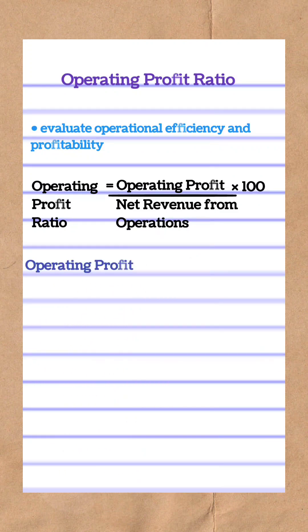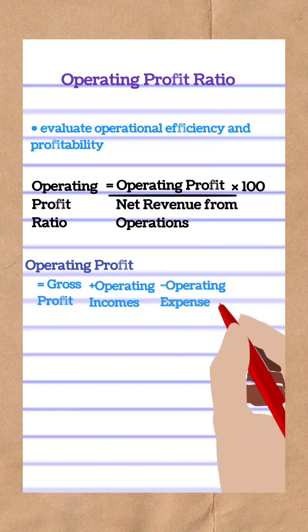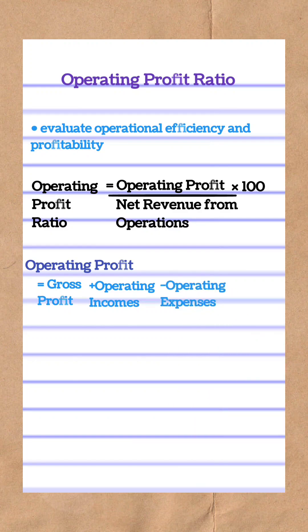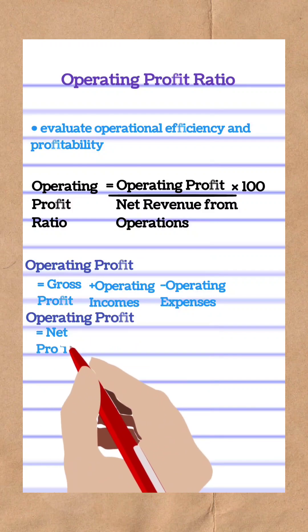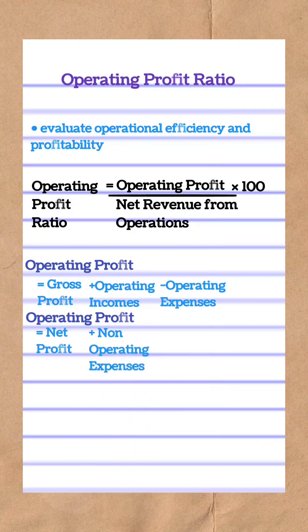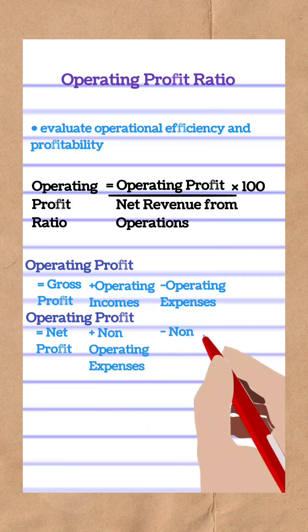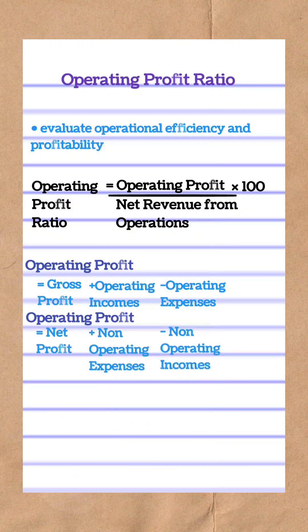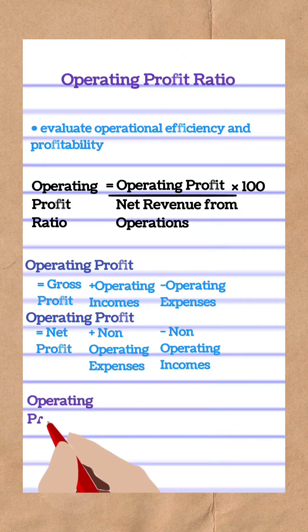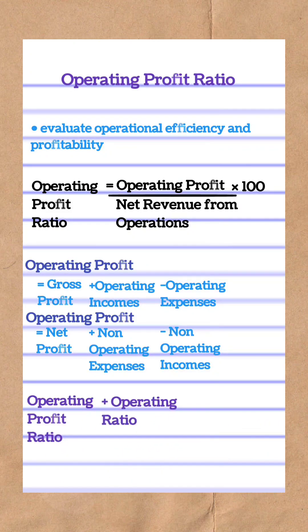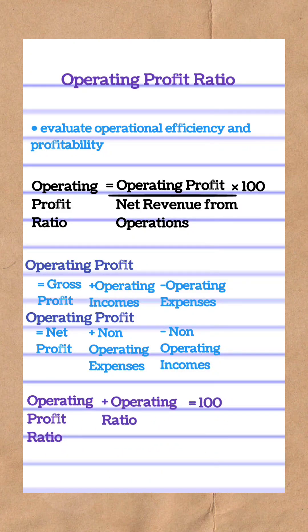There are two ways to calculate operating profits. The first formula is gross profit plus operating incomes minus operating expenses. The second formula is net profit plus non-operating expenses minus non-operating income. It is to be noted that operating profit ratio plus operating ratio will always be equal to 100.